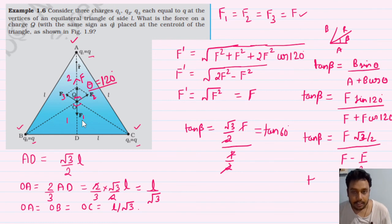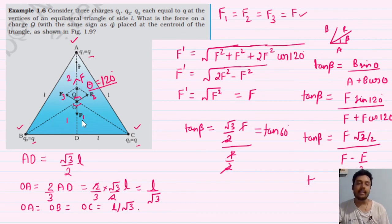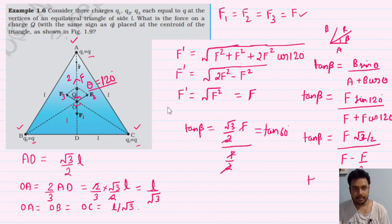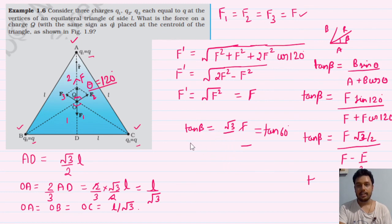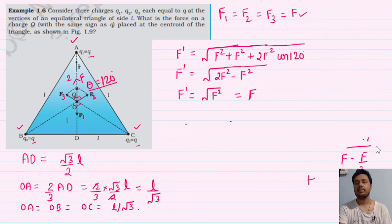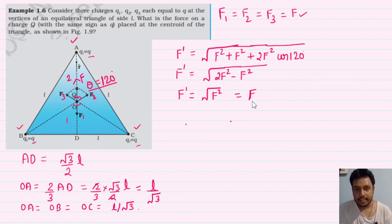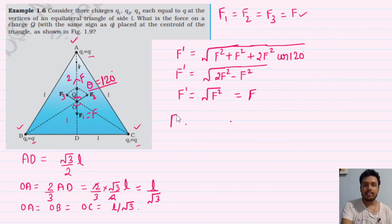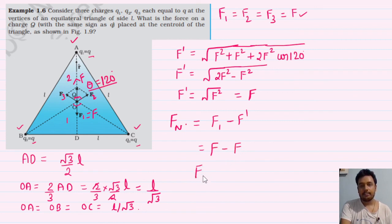यह मैंने आपको समझाने के लिए बताया। क्योंकि आगे जब question में values अलग होंगी, तब resultant का angle calculate करना होगा। अब answer: F2 और F3 का resultant F है जो F1 के exactly opposite है। F_net = F1 − F_dash = F − F = 0।